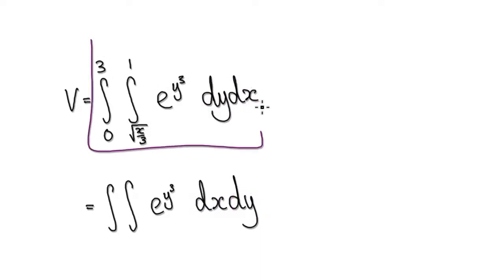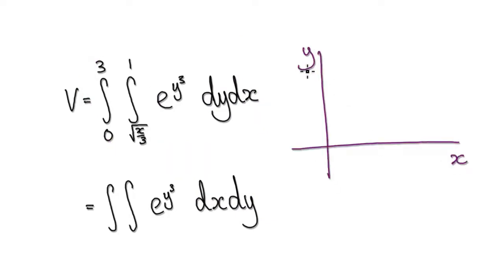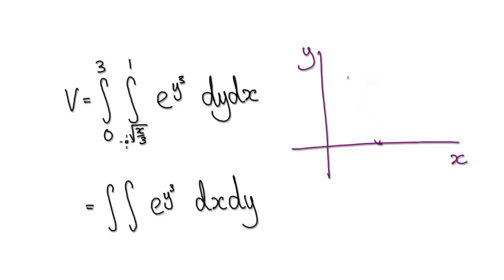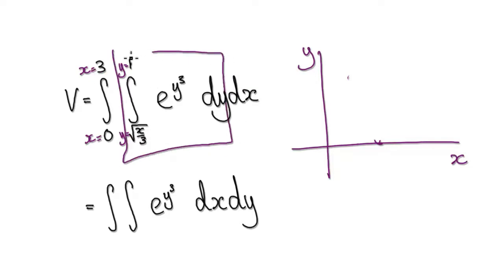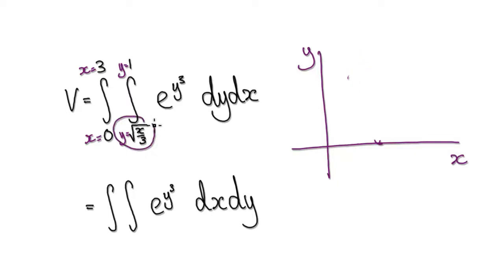In order to switch these two around, we need to understand our region of integration. So this is x and this is y. We're moving parallel to the y-direction, moving along like this, which means this must be y equals something — y equals one. And x equals something. Looking at this, it's moving parallel to the y-axis, saying start here and end here.